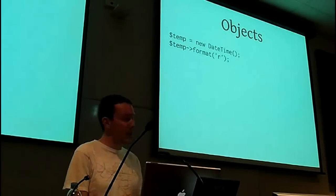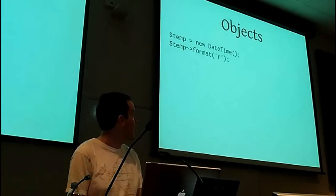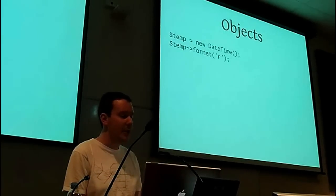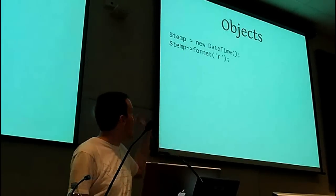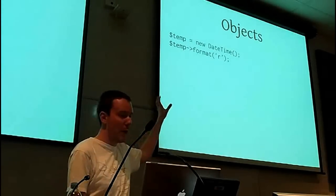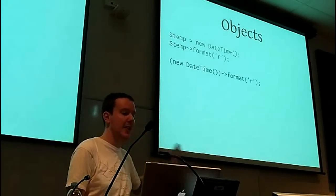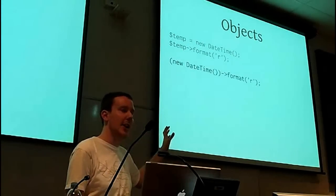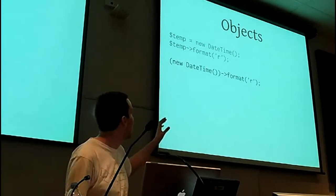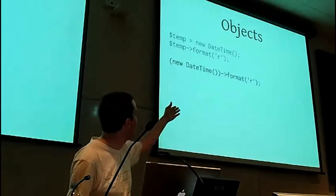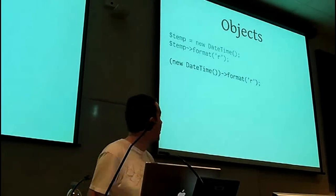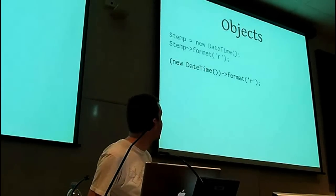Objects can also now — and this is actually very new, it only came in the last beta — if you have a temporary object which you just want to call one method on, you can now define it inline and call a method directly on it, like some other languages have allowed for a long time.